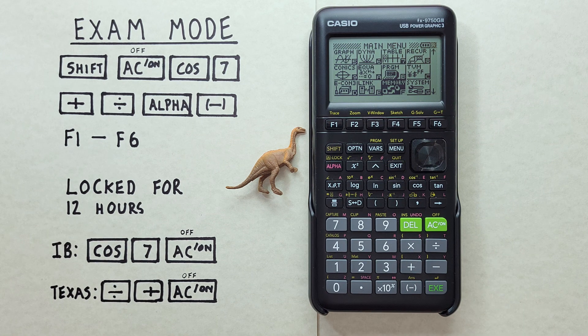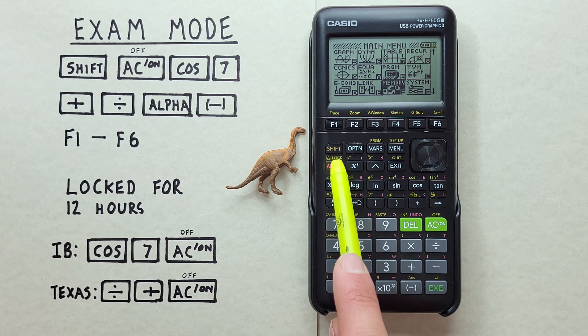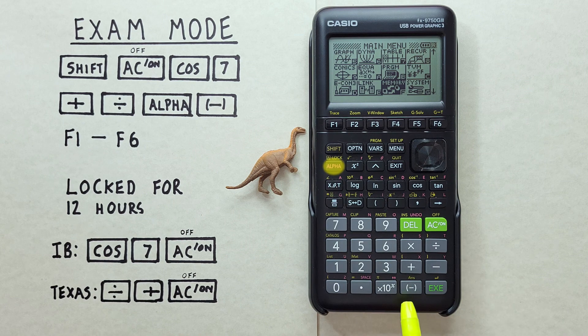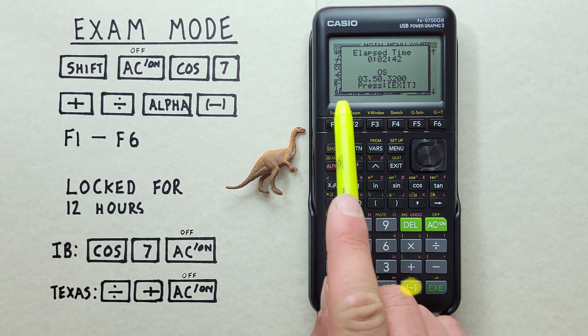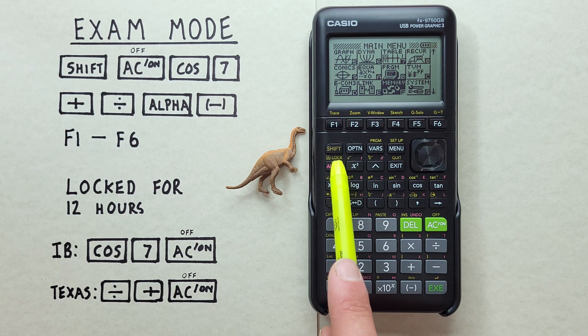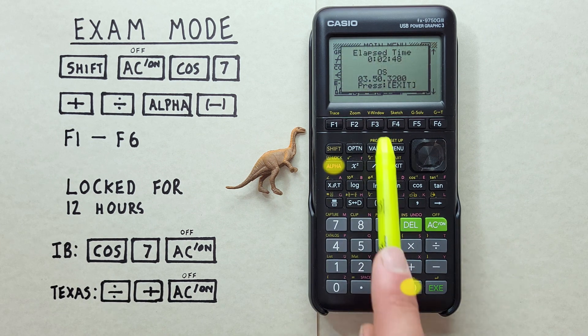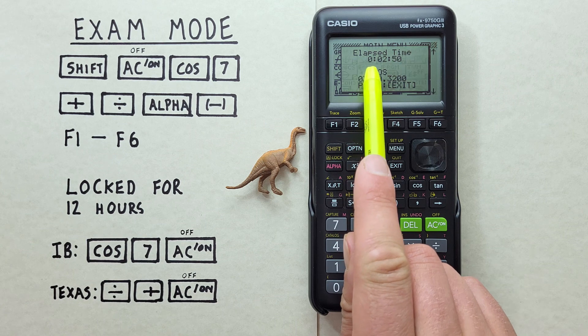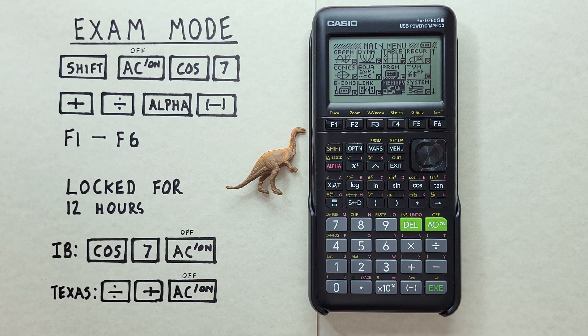If we want to see how much time is left on the 12-hour countdown to get out of Exam Mode, we can do that by pressing the Alpha key and then the Negative key. That brings up this screen here. Oh, it flashes away. We can do it again. Alpha, Negative. And we see we're just about three minutes in there. So we have a long time to wait. And a reminder,